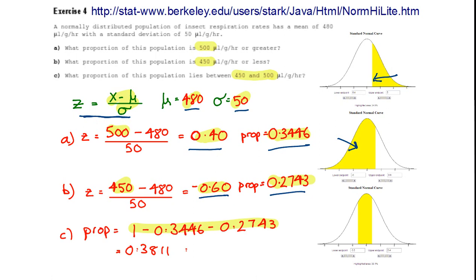And we can simply work that out by subtracting those two values from 1.0. So, 1 minus 0.3446 and 0.2743 gives us 0.3811. Roughly 38% of the distribution or 38% of the insect respiration rates are in there.